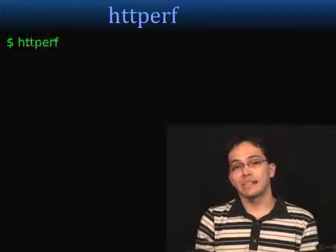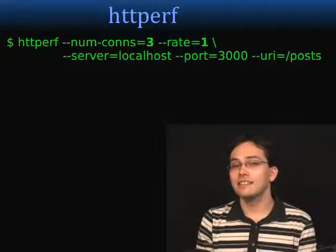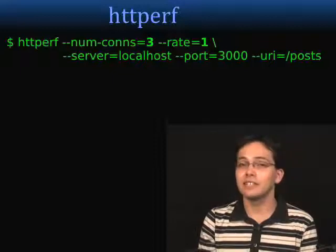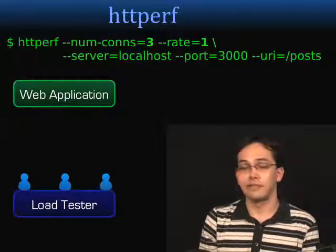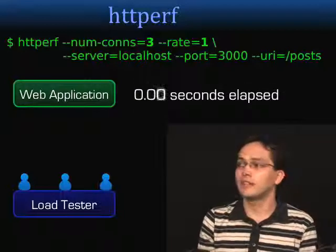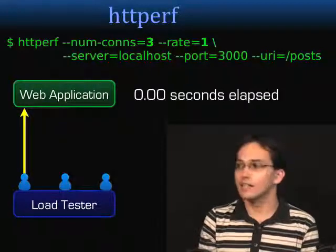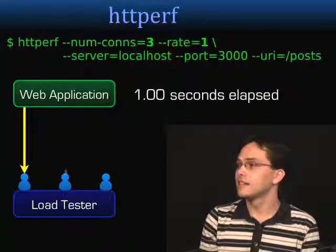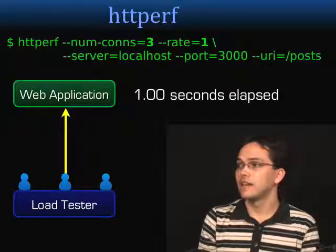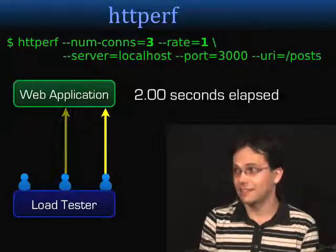A simple HTTPerf command might look something like this — we've got number of connections three and rate equals one. At first glance you might think this is pretty similar to Apache Bench, however the rate means something slightly different. Here's our load tester, here's our web application — we have three guys again because we have three connections. What that rate one is saying is send one request per second. So that second request isn't going to fire until we've hit one second — then the second request fires. Now we hit two seconds: the third request is going to go ahead and fire whether or not the second one has come back yet. So you can see — this is the big difference.